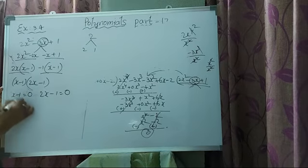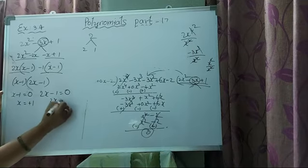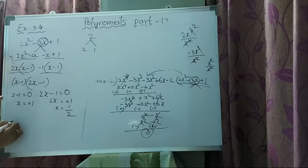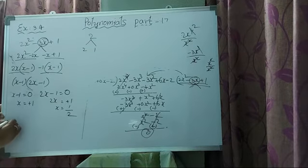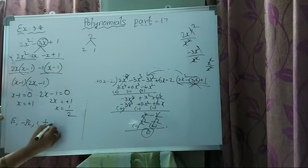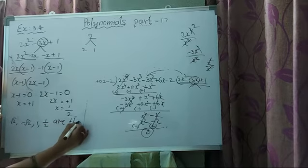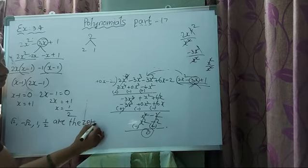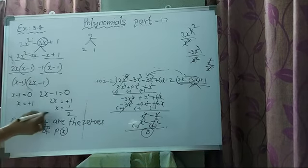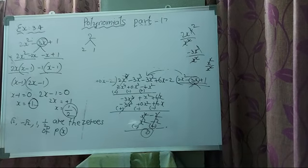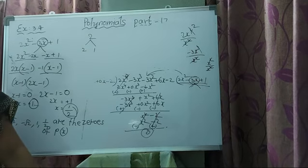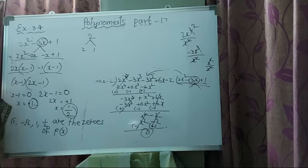From x minus 1 equals 0, x equals 1. From 2x minus 1 equals 0, x equals 1 by 2. So what are the zeros of this particular polynomial? Root 2, minus root 2, 1, and 1 by 2 are the zeros of P of x. We found 2 more zeros — total 4 zeros. In that way we have to do the third Roman numeral problem. Tomorrow we will see that one. Thank you.